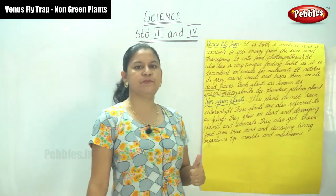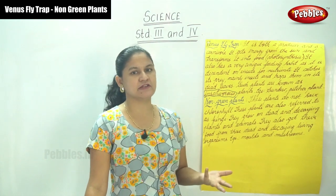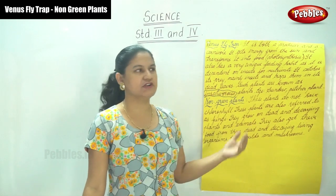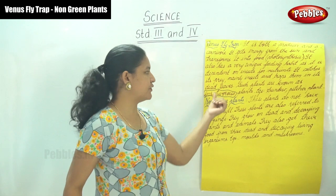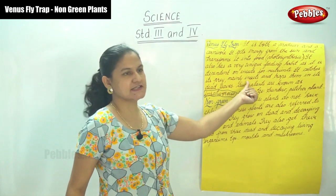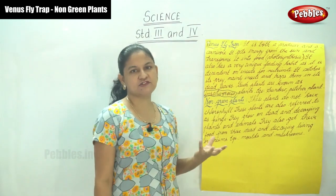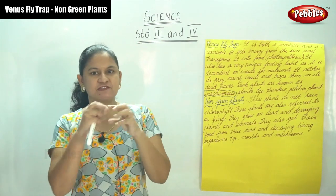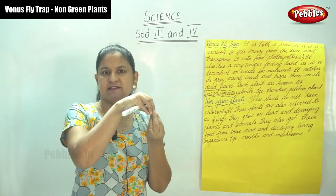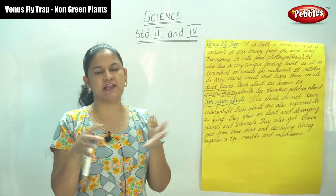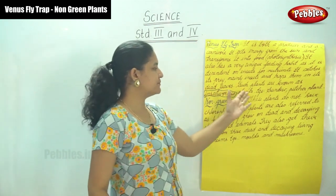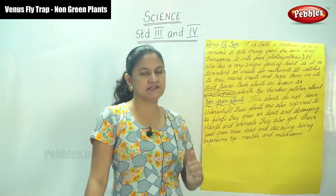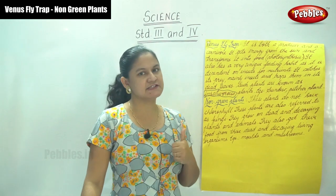Unlike other plants that depend on roots for water and minerals, the Venus flytrap depends on insects for its nutrients. It catches its prey — mainly insects — and traps them in its leaves. Once an insect is trapped in a Venus flytrap, it cannot escape. Such plants are known as insectivorous plants.